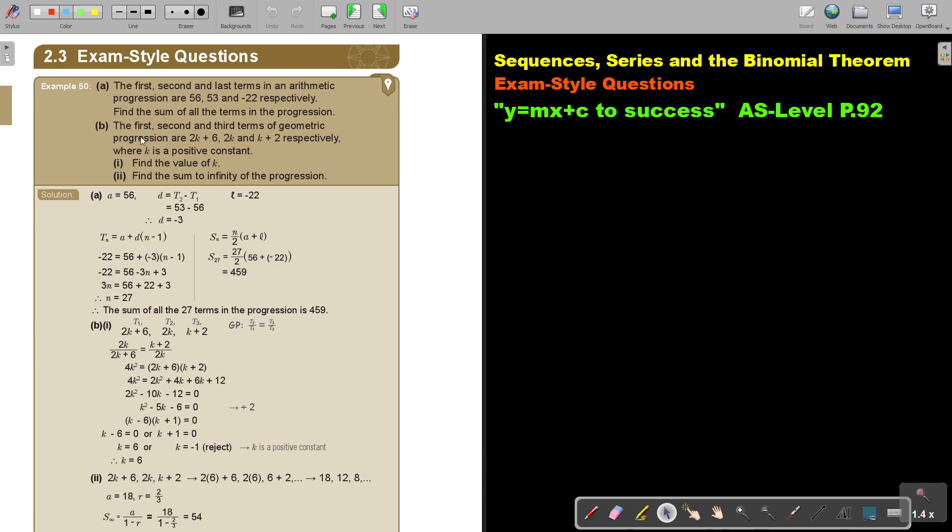And I just work it out and I get an answer. Let's look at the next one. The first, the second and the third terms of a geometric progression. So now you must think of the formulas of gp is this, this and this respectively, where k is a positive constant.